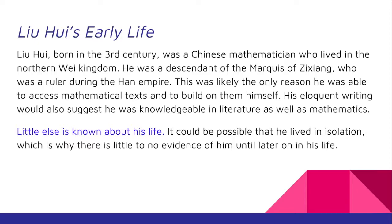Liu Hui, born in the 3rd century, was a Chinese mathematician who lived in the Northern Wei Kingdom. He was a descendant of the Marquis of Zixiang, who was a ruler during the Han Empire. This was likely the only reason he was able to access mathematical texts and to build on them himself. His eloquent writing would also suggest he was knowledgeable in literature as well as mathematics.